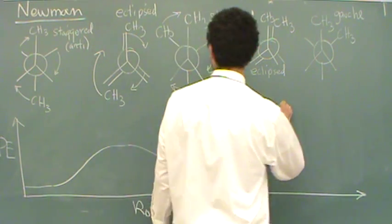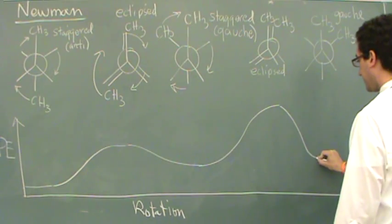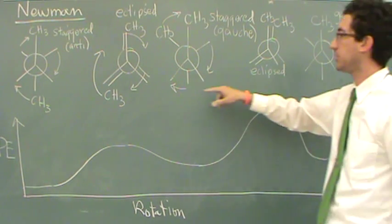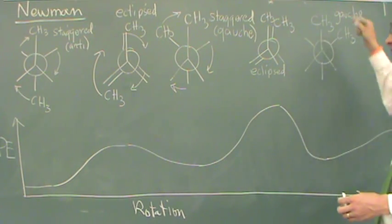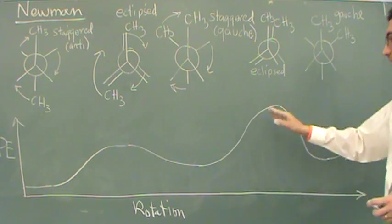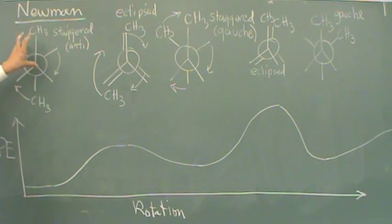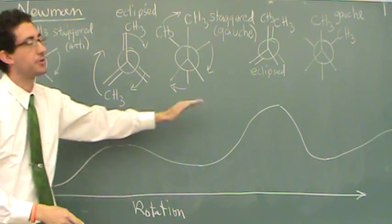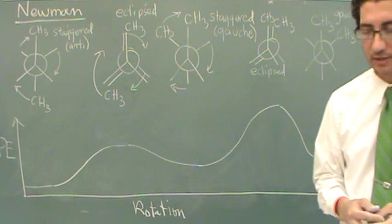And then, when we get to the next position, we're at a gauche again. Same energy as this one right here. So I'm going to go back down to there. And we would repeat so on and so forth. The next eclipse position would be this energy. So it looks something like that. And it would go through this cycle because it keeps rotating the back. And this kind of graphs the energetics. And often, on an exam or a homework, your instructor will give you something and they'll want you to draw the Newman projection and then rotate one of the carbons and draw out a graph that looks just like this.